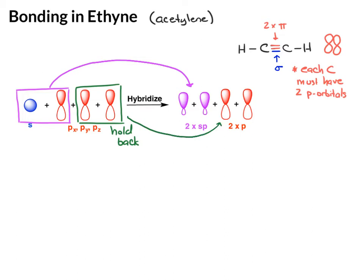When drawing your orbitals around the carbon, you want to space your hybrid orbitals out as far apart as possible. We have two things, so the farthest you can space those two things out is 180 degrees apart. I'll put one here and one here. Be a little bit careful because this can get confused with a p-orbital with its two lobes, but this is actually two separate sp-hybrid orbitals.